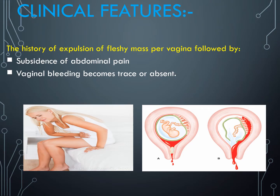Now let's see what are the clinical features of complete abortion. When a woman comes to you with a history of expulsion of a fleshy mass per vagina, followed by subsidence of abdominal pain, and vaginal bleeding becomes trace or absent, it suggests complete abortion. The lady who is pregnant will come with a history of expulsion of a fleshy mass per vaginally, after which the abdominal pain has reduced and vaginal bleeding has also become trace or absent.